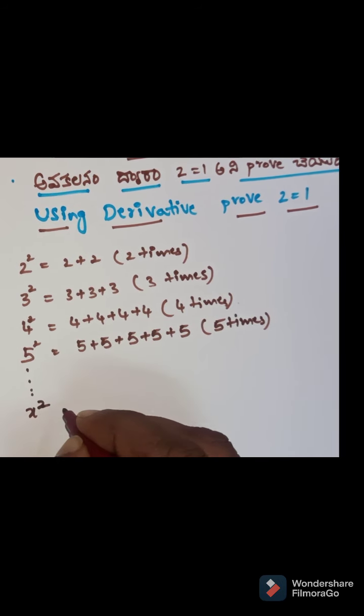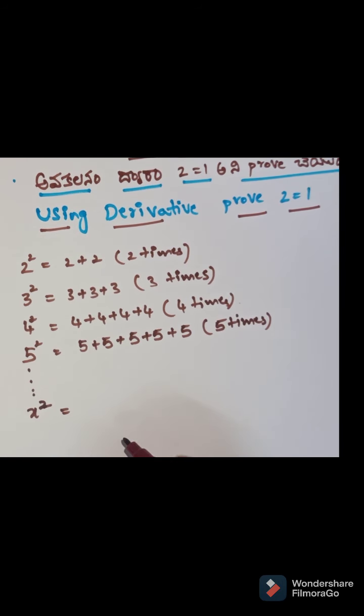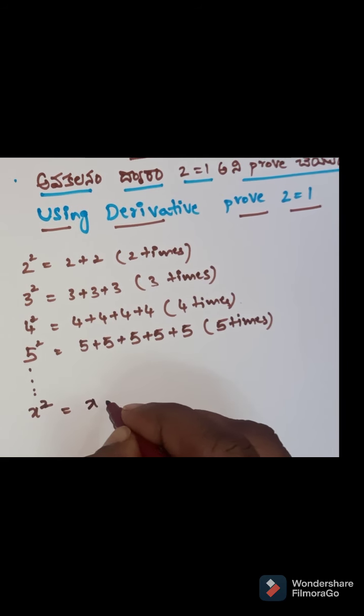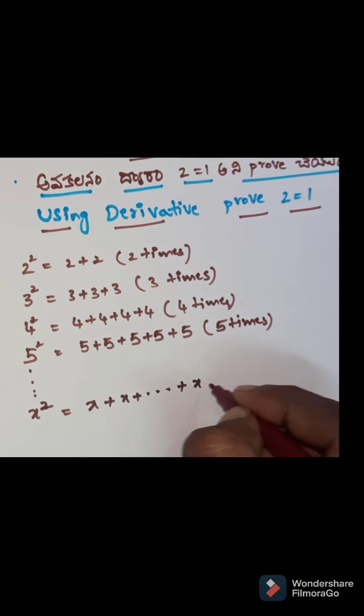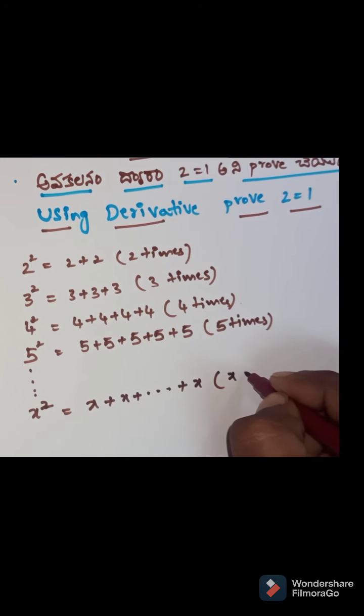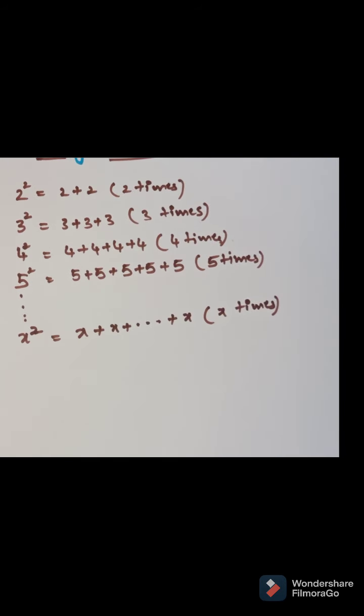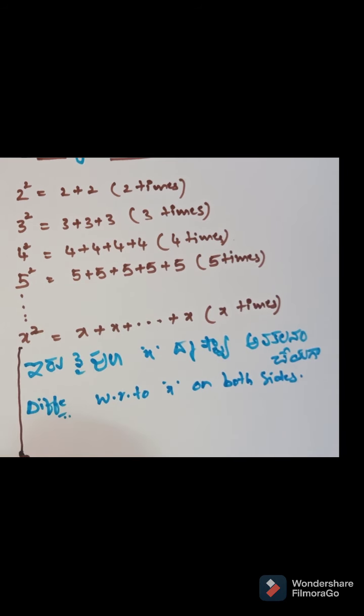If X square value. Now 5 square value. 5 and 5 times add. X plus X plus X, this means x times add.